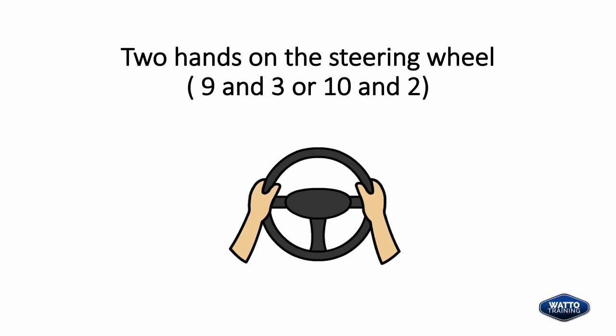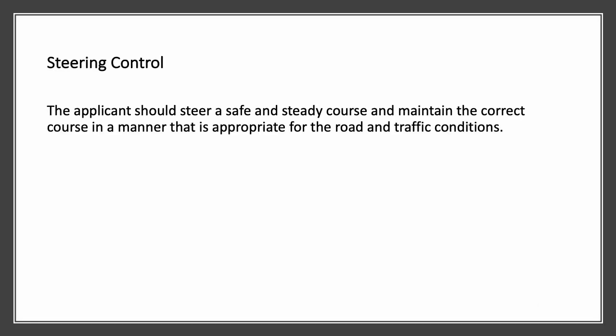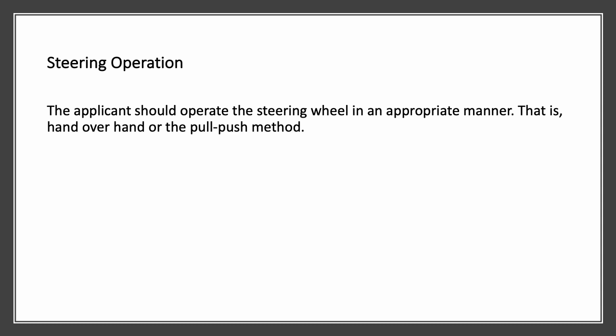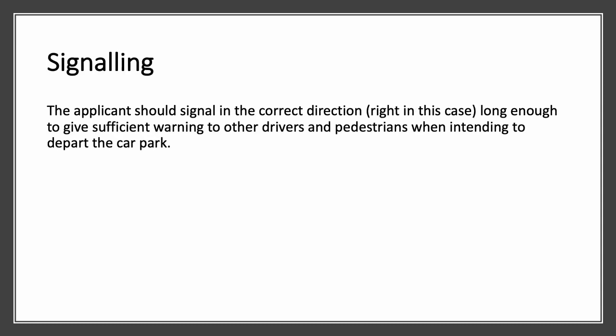The learner should keep two hands on the steering wheel either at 9 and 3 or 10 and 2. The applicant should steer a safe and steady course and maintain the correct course in a manner appropriate for the road and traffic conditions. The applicant should operate the steering wheel in an appropriate manner, that is hand over hand or the pull-push method. The applicant should signal in the correct direction — right in this case — long enough to give sufficient warning to other drivers and pedestrians when intending to depart the car park.